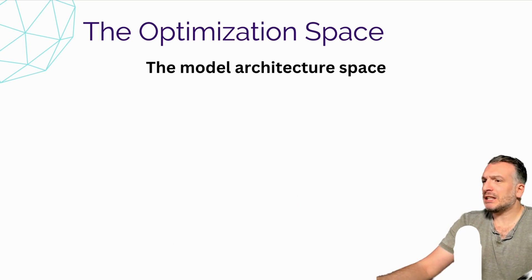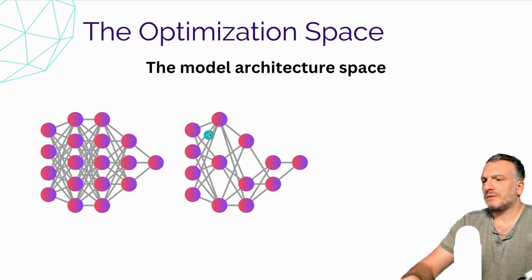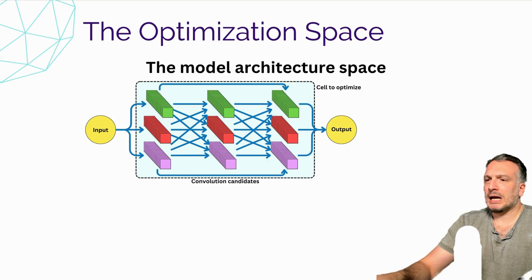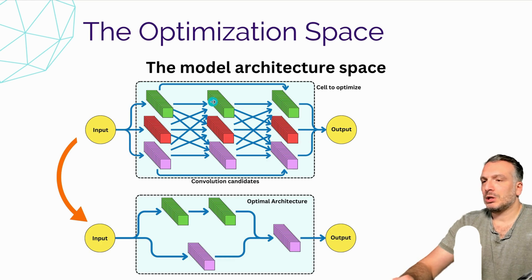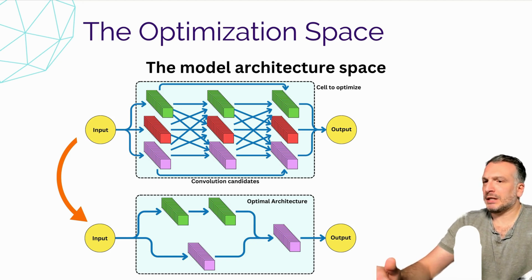We can consider the concept of model architecture space. This is more relevant for neural networks. The model architecture can be characterized by a set of hyperparameters, but it tends to be a more complex search than typical hyperparameters. For example, considering this neural network, a more optimal model could remove a couple of neurons in a different configuration. We could also look at computational blocks — imagine a neural network with many convolutional layers where there might be a more optimal organization. We could remove some layers to make it more optimal.